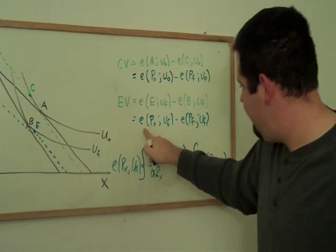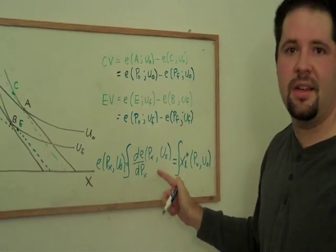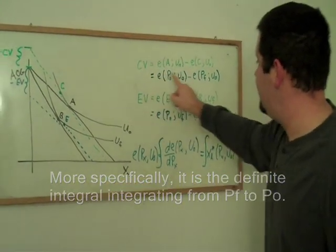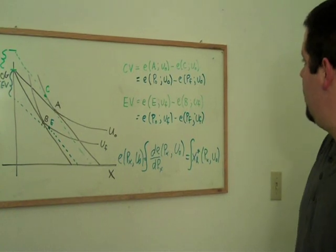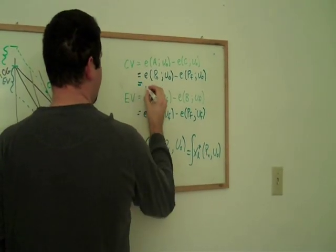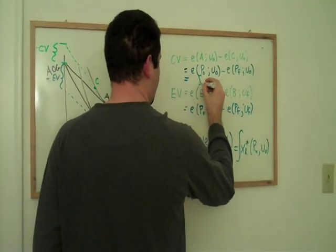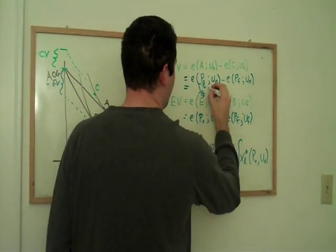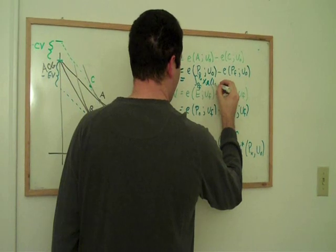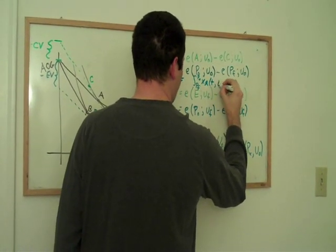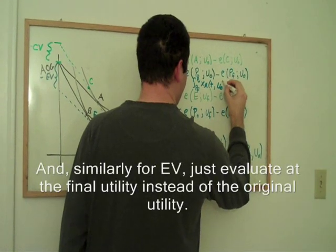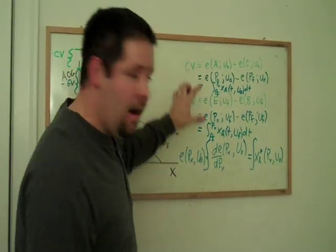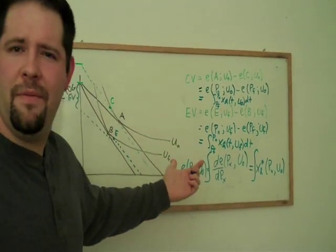Turns out that when we have differences like this, this is just a definite integral. For example, if we want to compute the compensating variation, what we can do is we can just compute this integral. It's going to be the integral from the final price to the original price of our Hicksian demand curve. We will call this a dummy variable T and our original utility. So that will be our compensating variation. So now we have sort of an integral way of thinking about this.